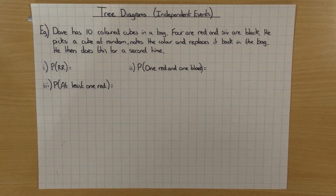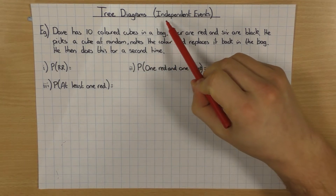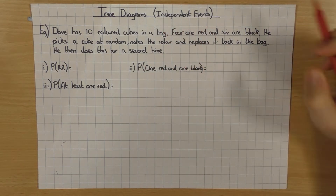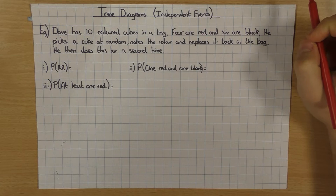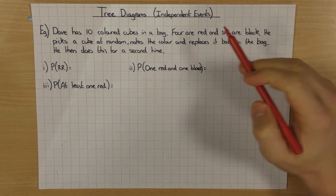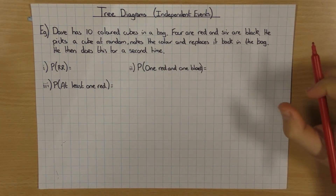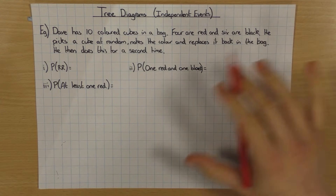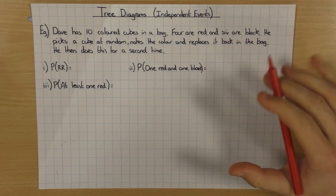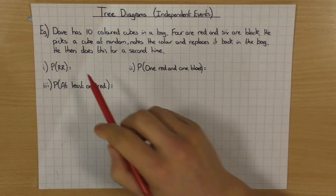In this video we're going to have a look at tree diagrams, and in this particular video we're going to have a look at when we've got independent events. When it says independent events, all that means is that when you do the first event it has no impact on the second event. They're completely independent, they don't affect each other.